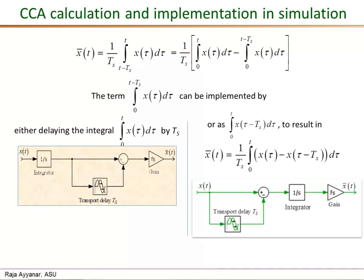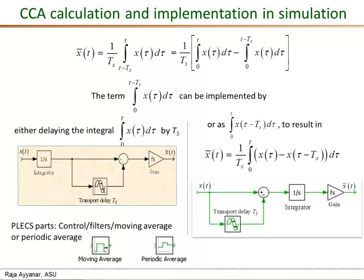Take x of t, delay it by Ts, take the difference, and then do the integration, and to do the divided by Ts you multiply by fs. PLEX actually has two CCA implementations available under the library control filters. The two types are called moving average or periodic average.